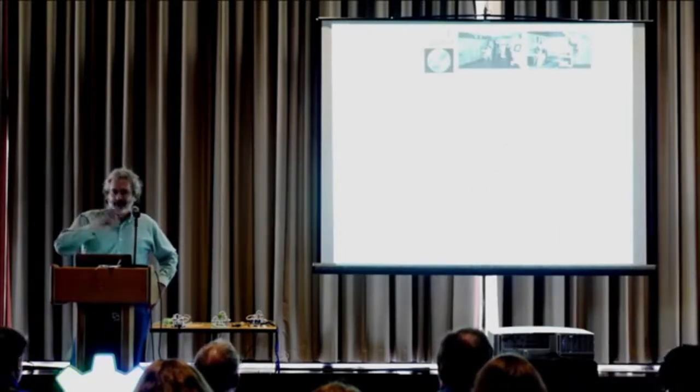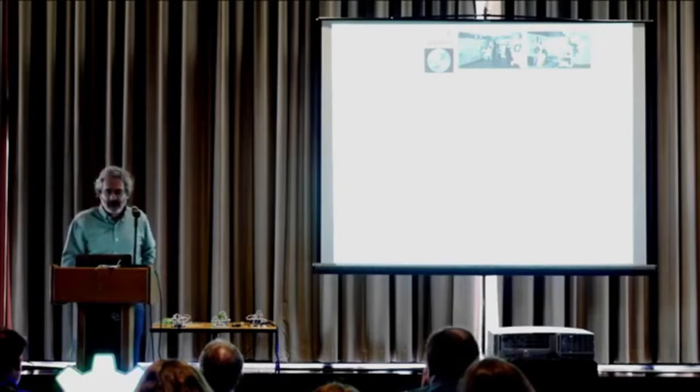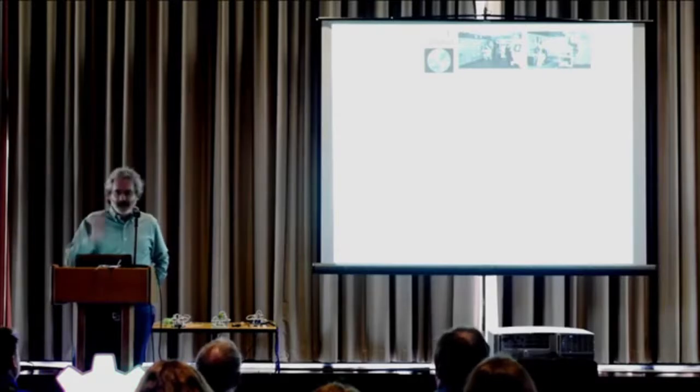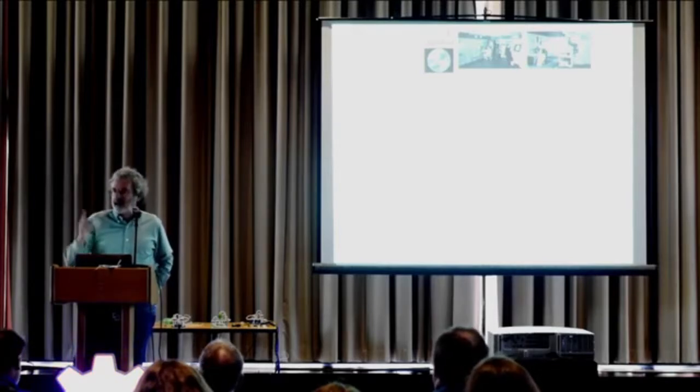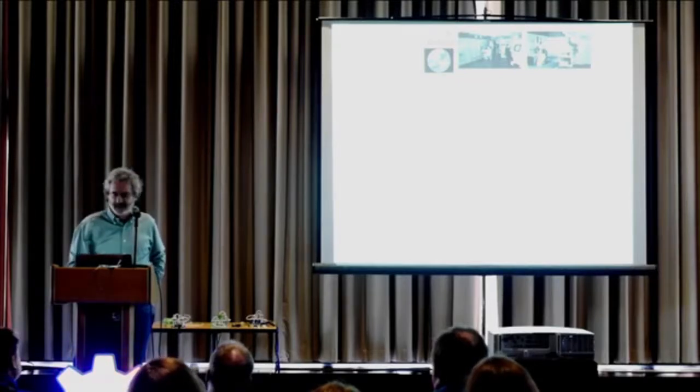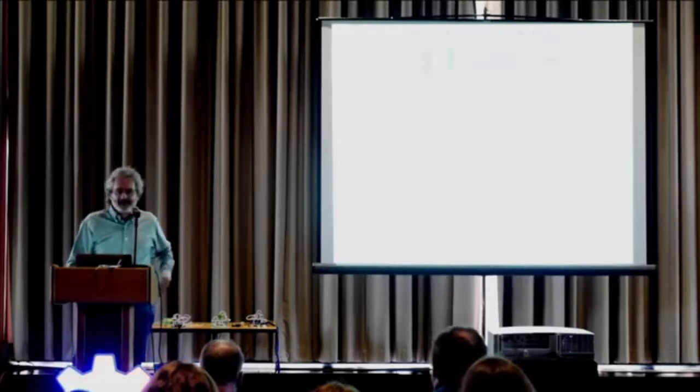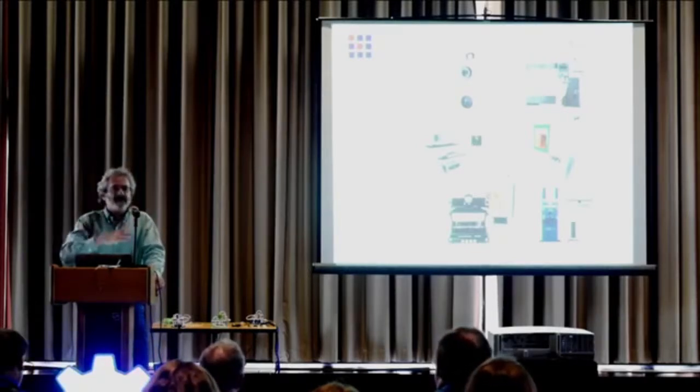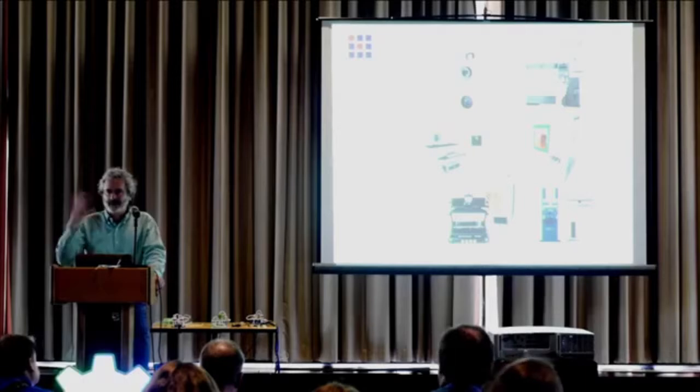To look at that scaling, data point number one is this. A few blocks that way, there's a building that still has the plaque on it that had this in it. This was the Whirlwind, the first significant real-time computer. Modern operating systems happened here in 1951. A few blocks that way, in 1952, MIT made the first computer-controlled manufacturing machine. This machine roughly got connected to make parts. There was one of each of these.